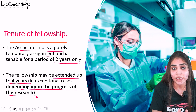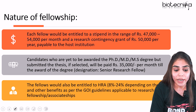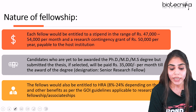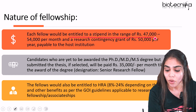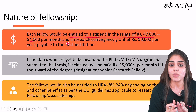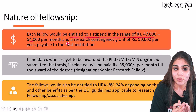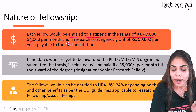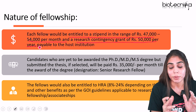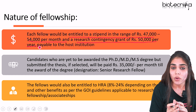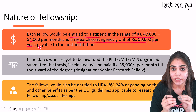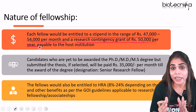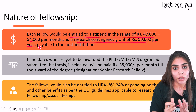Your research work will be reviewed based on what you have done over two years. Regarding the nature of fellowship and stipend: each fellow is entitled to a stipend in the range of ₹47,000 to ₹54,000 per month. Additionally, a research contingency grant of ₹50,000 per year will be payable not to the applicant but to the host institution, though it is given in the name of the applicant.